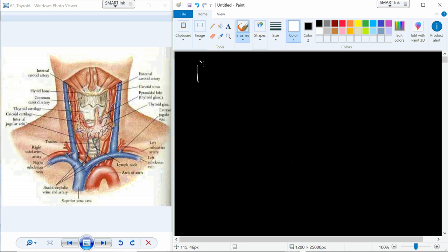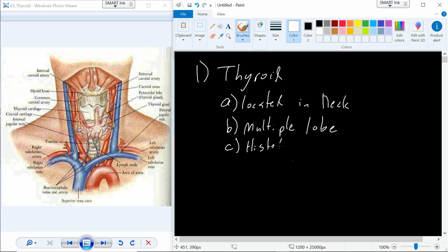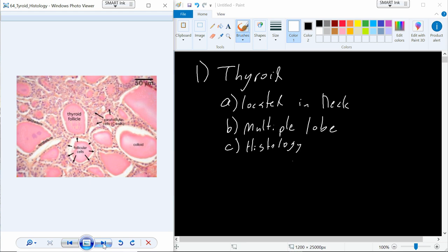Alright, today we're going to pick up with the thyroid. The thyroid is an endocrine organ that's located in the neck and it's going to be a multi-lobular organ. Let's take a look at the histology of the thyroid and the tissues that we have. The thyroid is set right here, kind of just inferior to the Adam's apple, which is the thyroid cartilage, and it has multiple lobes.